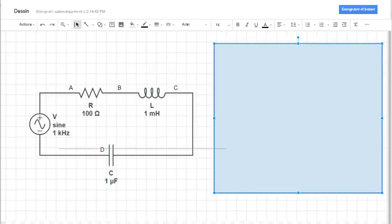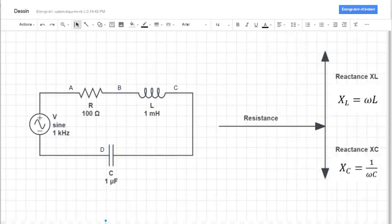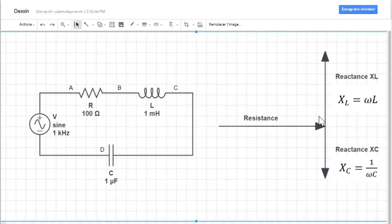So now I'll move this box out of the way, and you'll see here that we have the resistance as a vector, and the reactance from the inductor and the reactance from the capacitor as vectors as well.